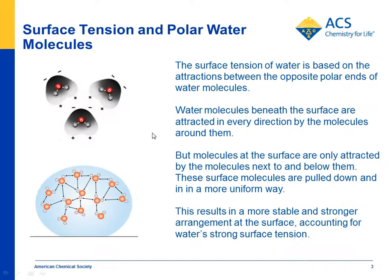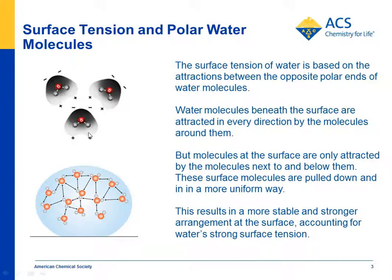How does that work? Students have already seen that the water molecule is polar — that it has an area with a positive charge and an area with a negative charge. Students know that's because of the unequal sharing of electrons between the oxygen and the hydrogen atoms in the water molecule. This polarity of water molecules makes them attract each other. But why does it have a strong surface? What's up with water surface tension?